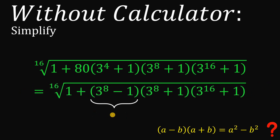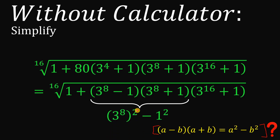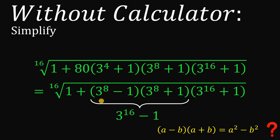Now let's focus on the next product. Again, using the same identity, we can say that (3 raised to the 8th power minus 1) times (3 raised to the 8th power plus 1) equals (3 raised to the 8th power) squared minus 1 squared. If we simplify this, we get 3 raised to the power of 16 minus 1. So we can replace this product with 3 raised to the power of 16 minus 1.